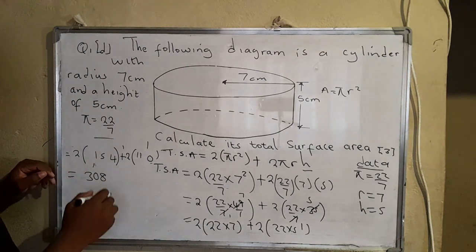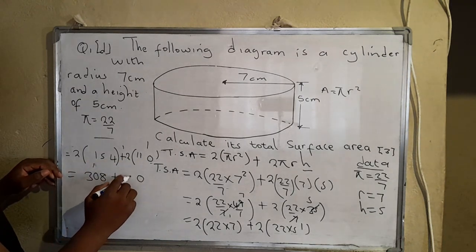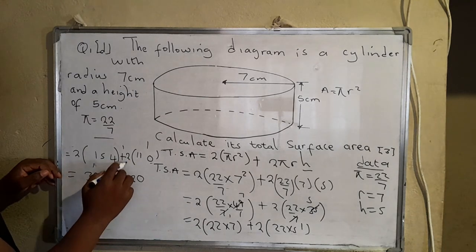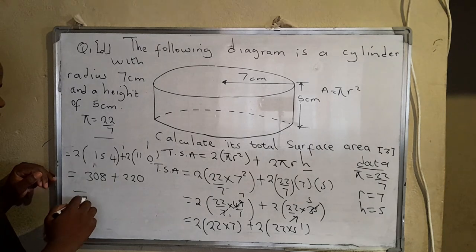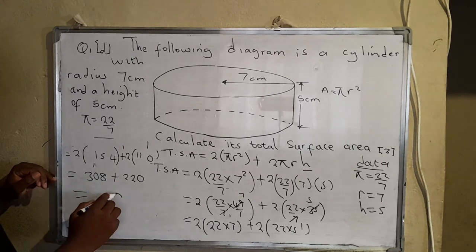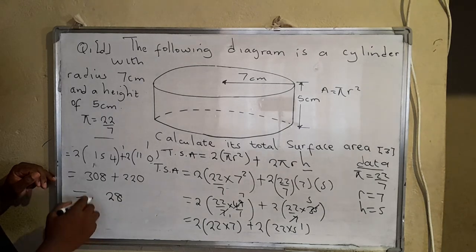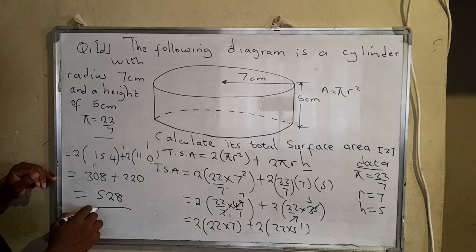Then plus 2 times 0, 0. 2 times 1, 2. 2 times 1, 2, that's 220. We can now add up everything. That would be 8 plus 0, 8. 0 plus 2, that's 2. Then 3 plus 2, that's 5, 28.